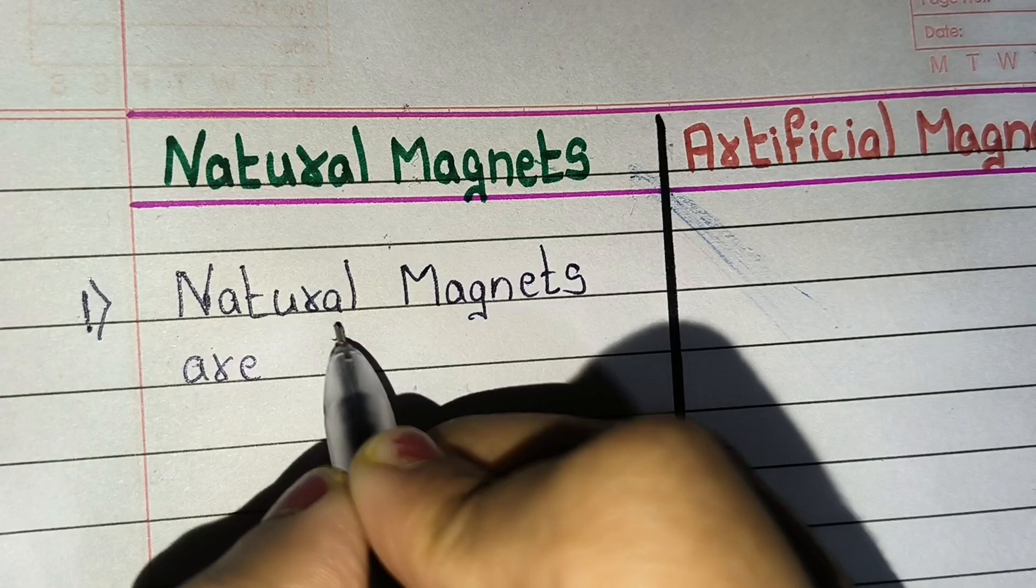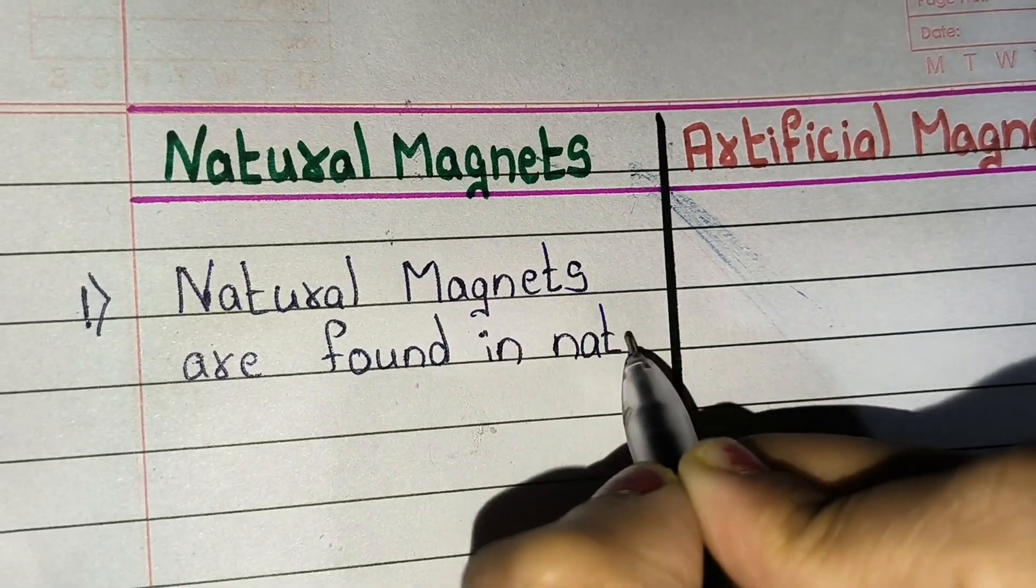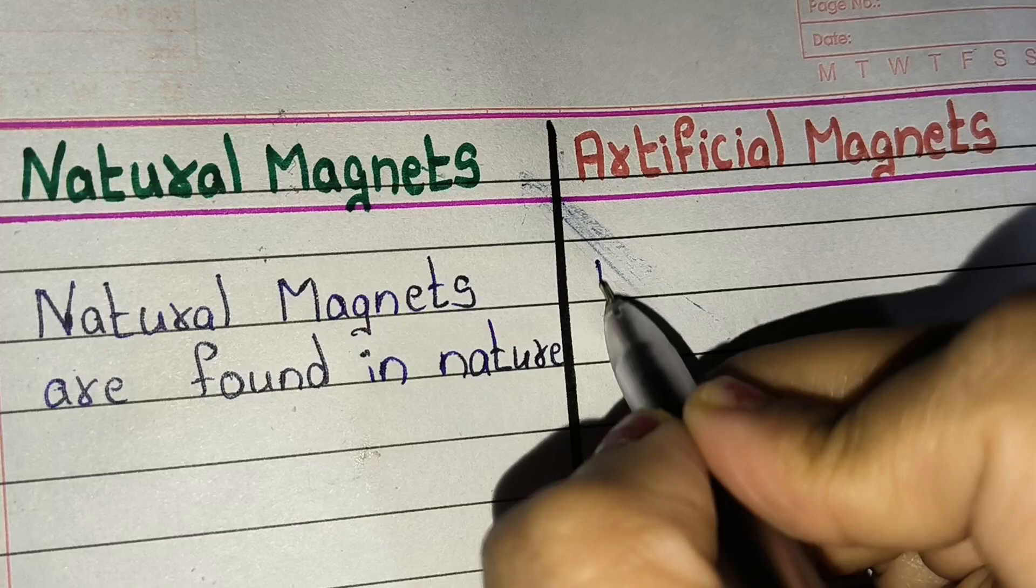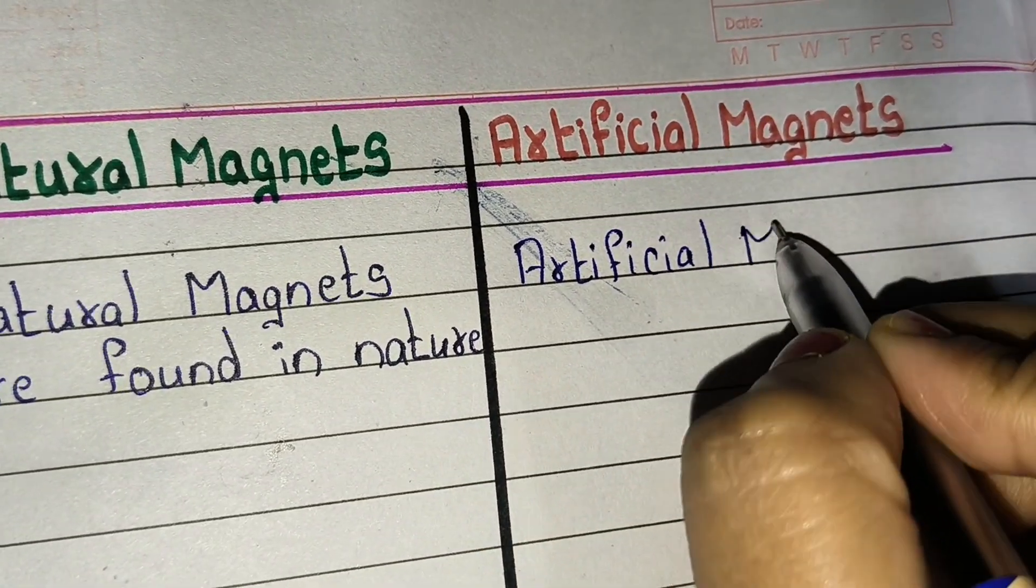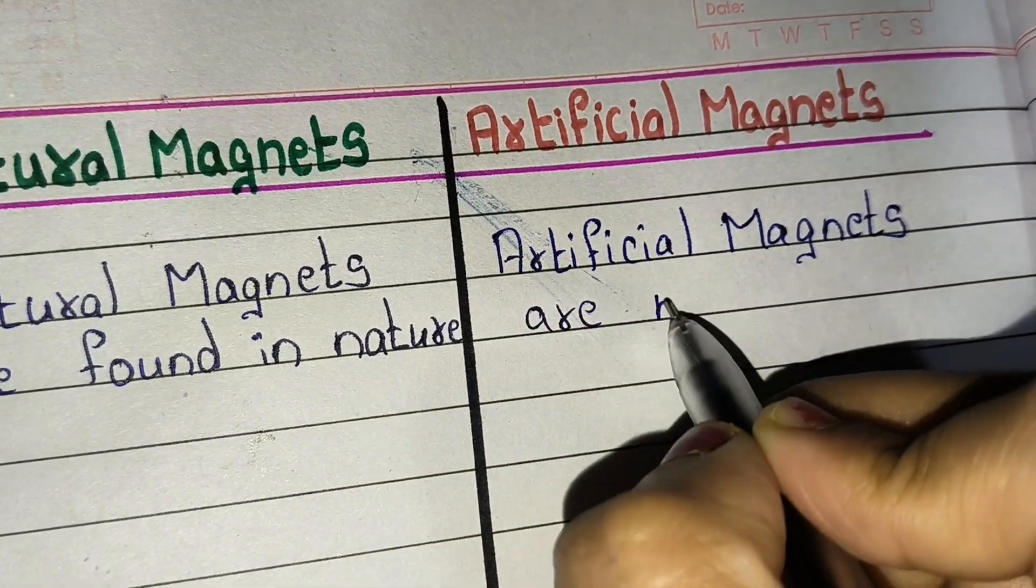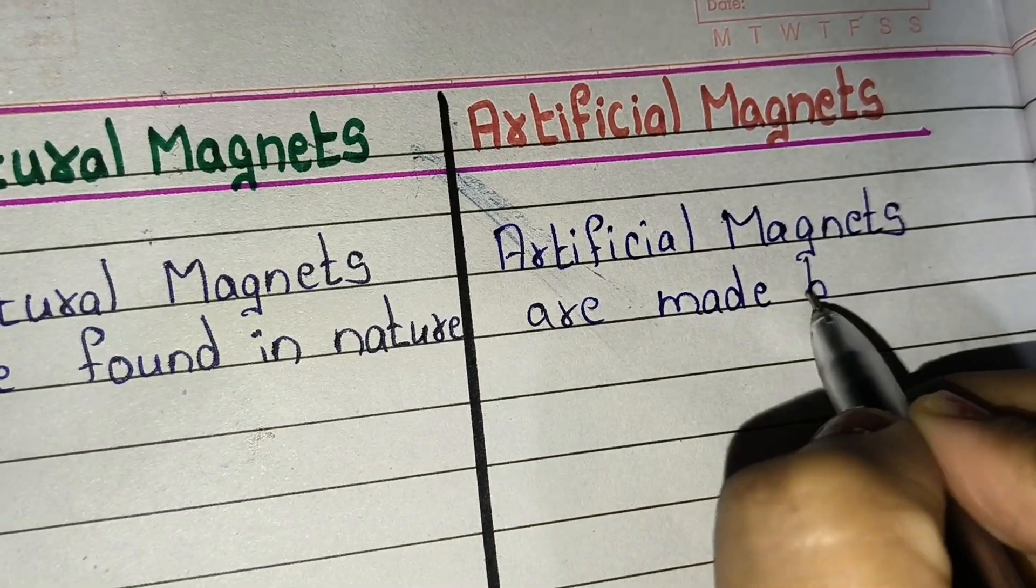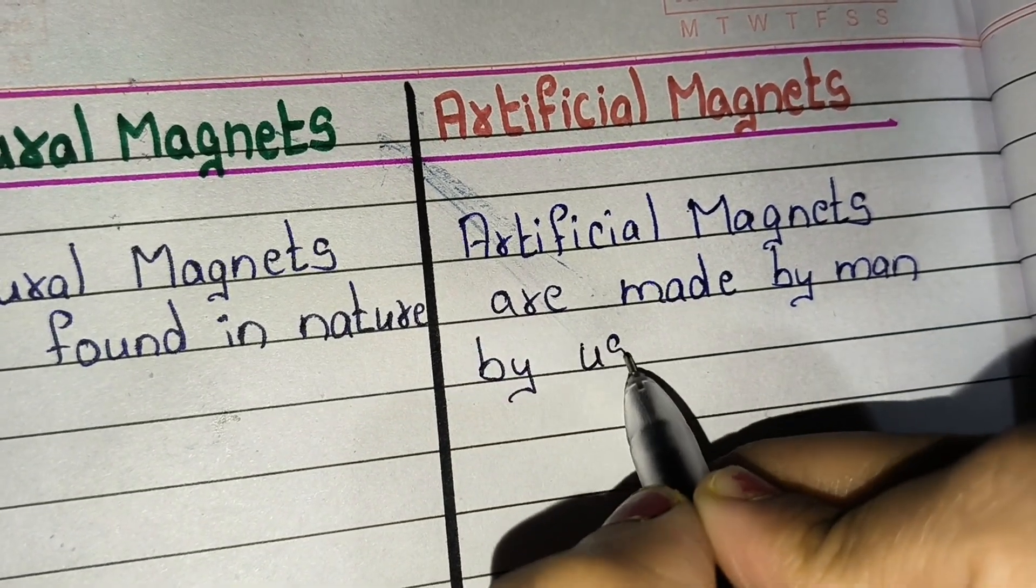First point: natural magnets are found in nature, but artificial magnets are made by men.